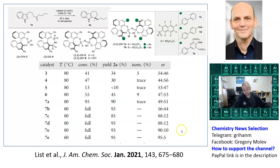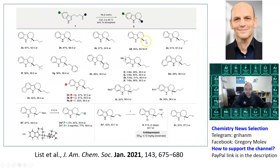They can also try different reaction conditions. Going from 80 degrees to 60 degrees with catalyst 7E gives even better stereoisomeric purity. After establishing which catalyst works better, they try different precursors and different groups to show how well the reaction works and how many different compounds can be built from it. You can see 94–96% enantiomeric purity and over 90% yields consistently.